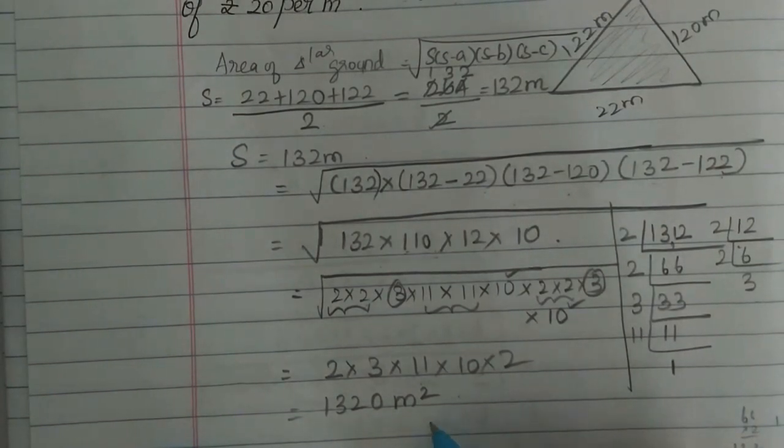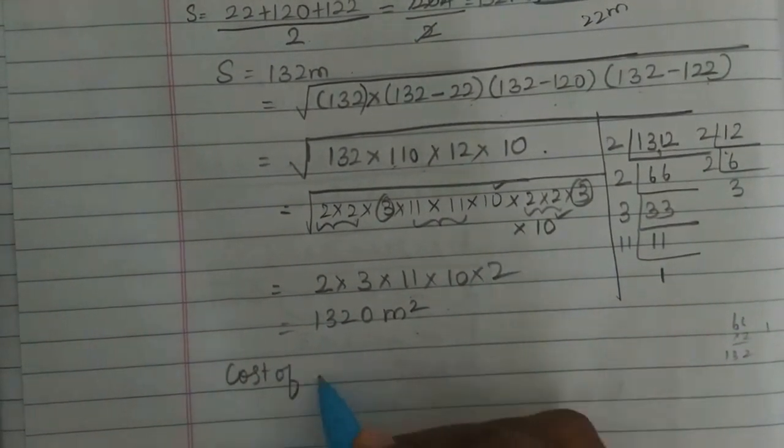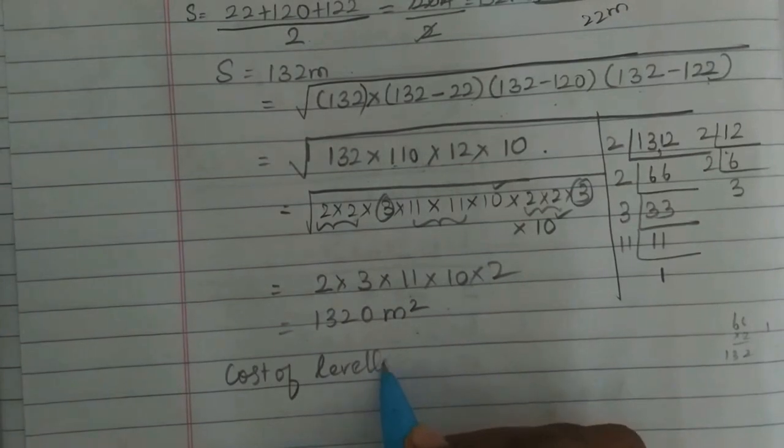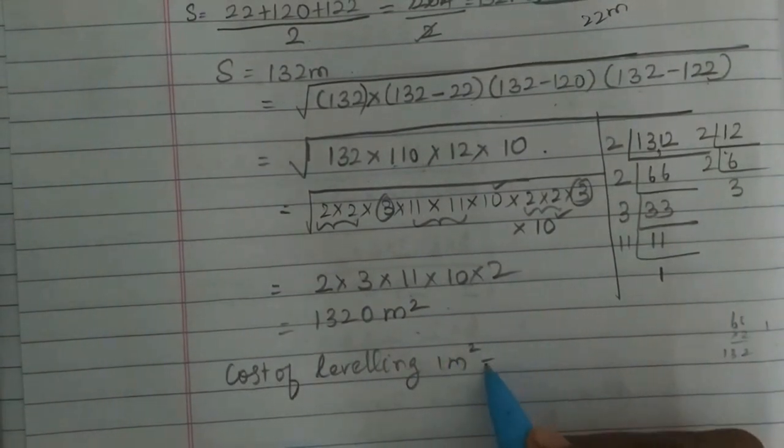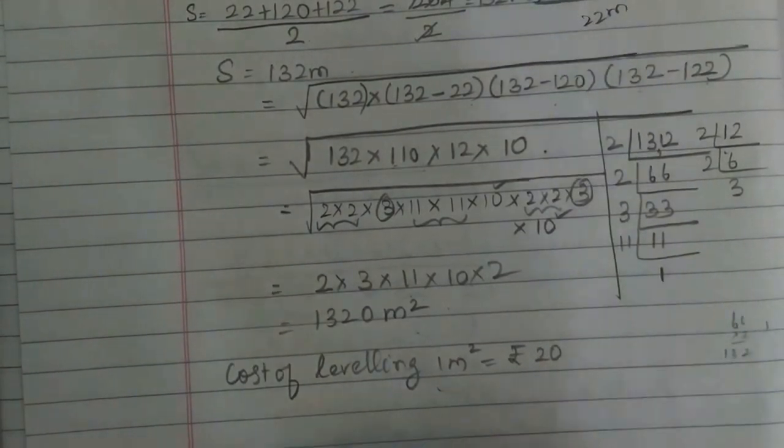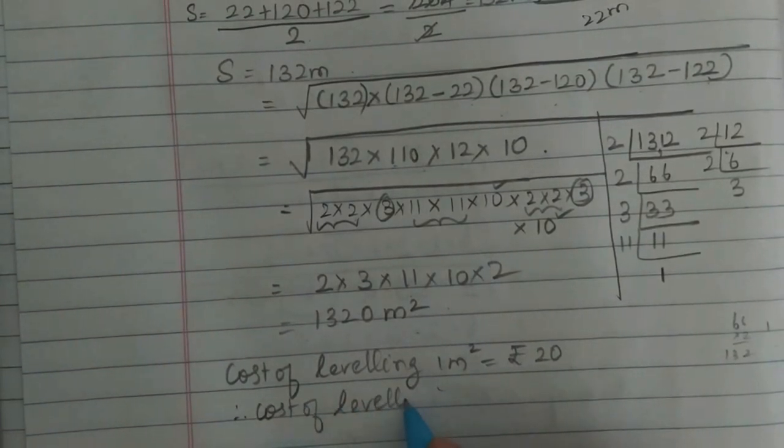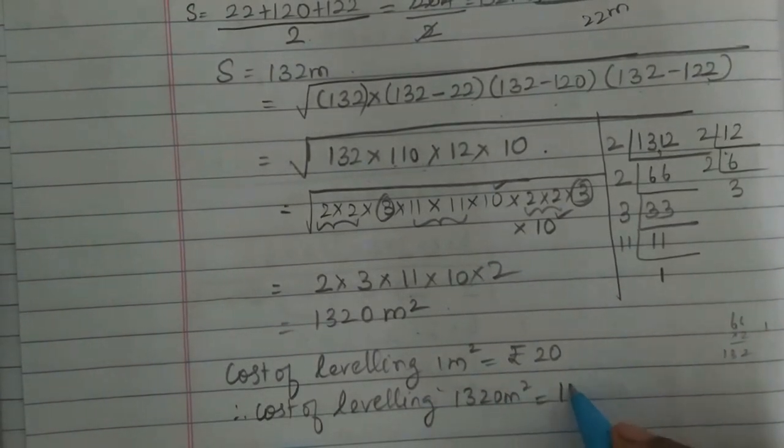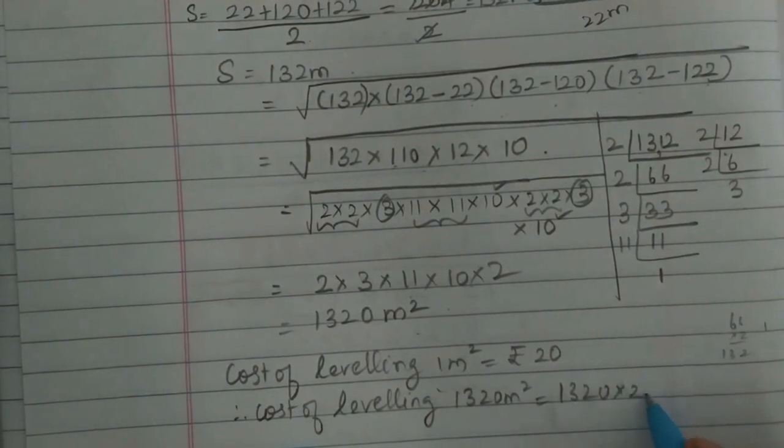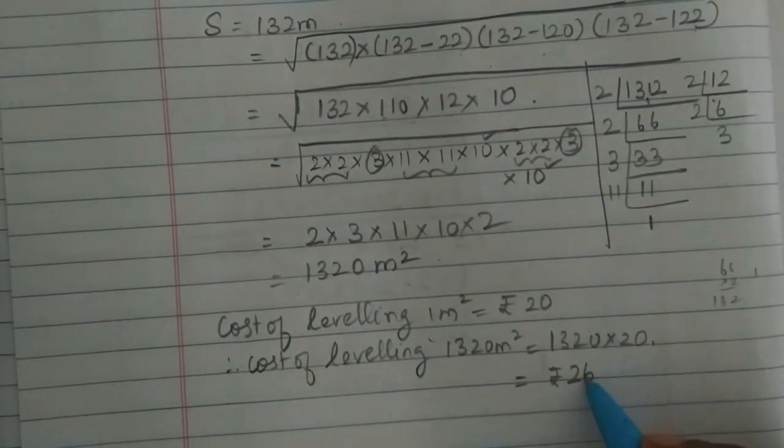So the area of the triangular ground is 1320 meter square. Now for cost of leveling: 1 meter square equals Rs. 20. Therefore, cost of leveling 1320 meter square equals 1320×20 = Rs. 26,400.